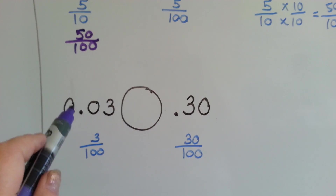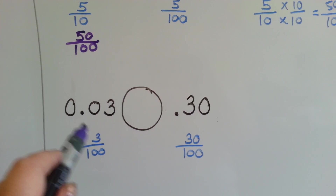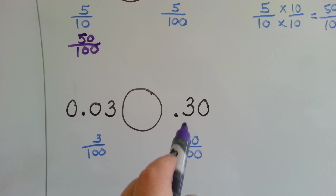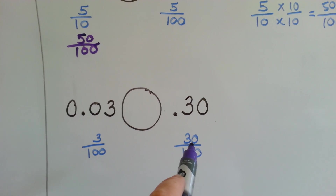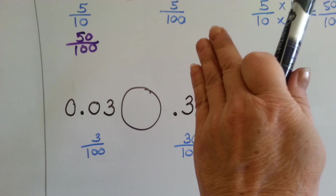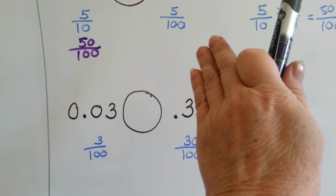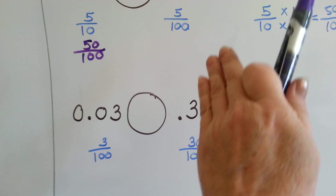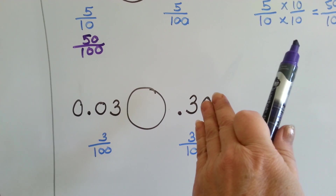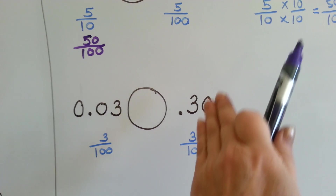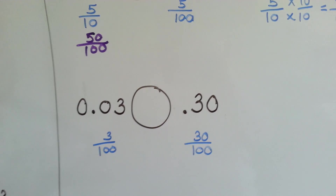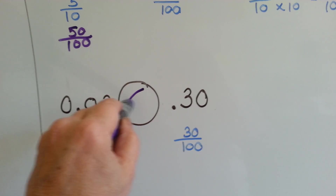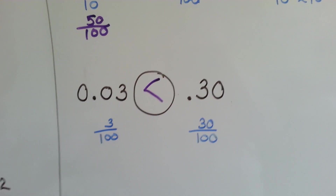How about this one? If you read it, it's three one-hundredths, and this is thirty one-hundredths. It could also be read as three-tenths if we took the zero away — take it away, it's three-tenths. So which one's bigger? Thirty is bigger than three.